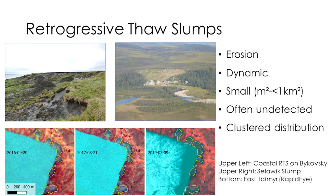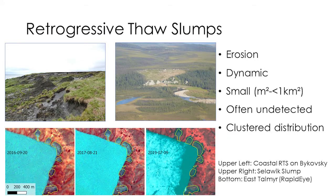The second example on the top is the Selawik slump, which my Alaska colleagues pretty much recognize instantly. Thaw slumps can be pretty dynamic and quite variable in size — they range from very small, just a few square meters, up to about one square kilometer, which are the mega slumps we find at Batagaika or some other places in northwestern Canada. The problem is they often remain undetected due to their scattered distribution, small size, and very remote areas.